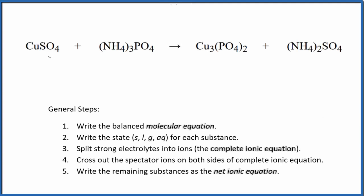To write the balanced net ionic equation for copper two sulfate plus ammonium phosphate, let's first balance the molecular equation. That'll look like this. If you need help balancing the molecular equation, there's a link in the description of this video for how to do that.